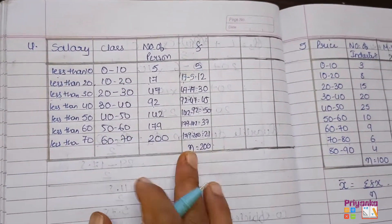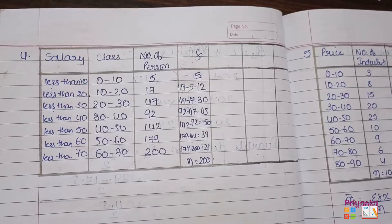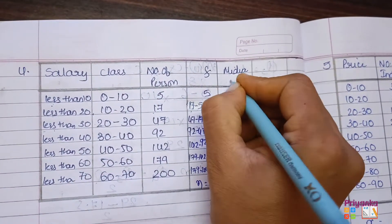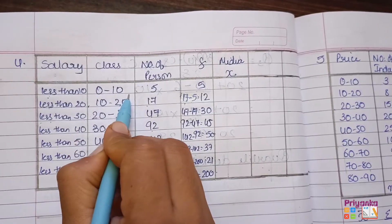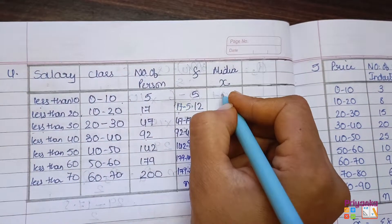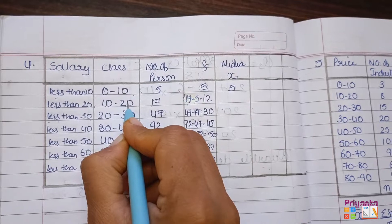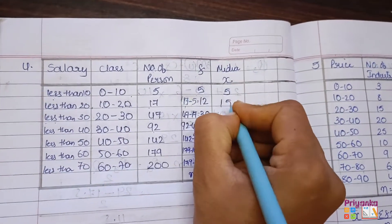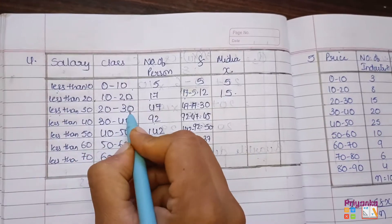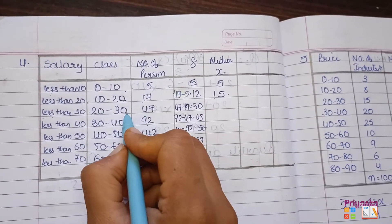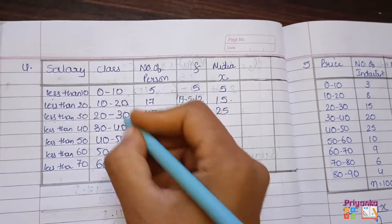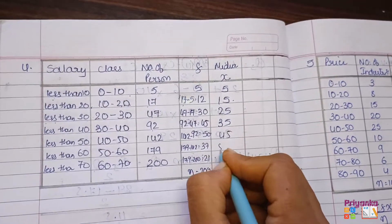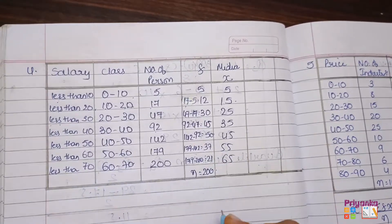Next we will find out the mid value. That is 0 plus 10 divided by 2 gives 5. Then 10 plus 20 is 30, divided by 2 gives 15. Then 20 plus 30 is 50, divided by 2 gives 25. This is how you get the mid values — you can do this in your calculator. Continuing: 35, 45, 55, and 65.